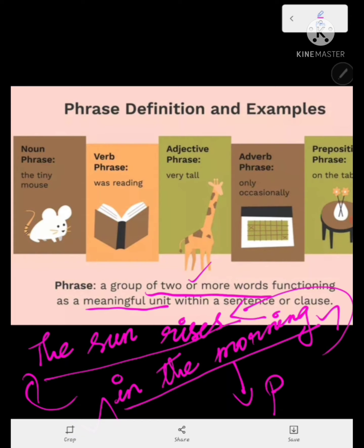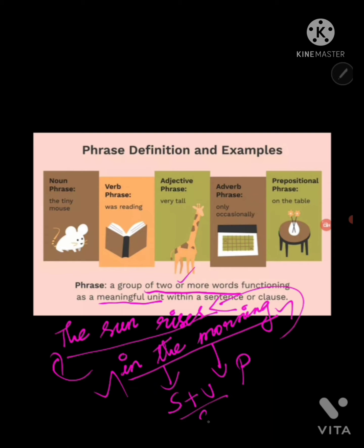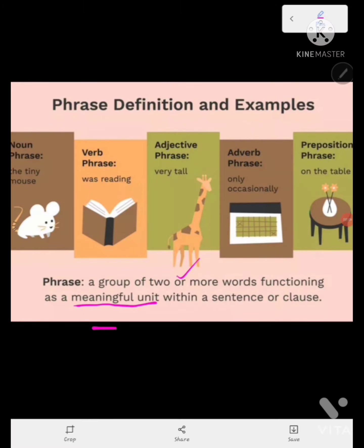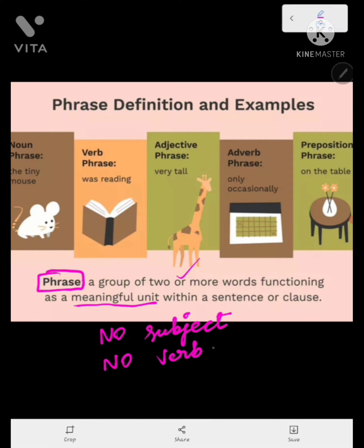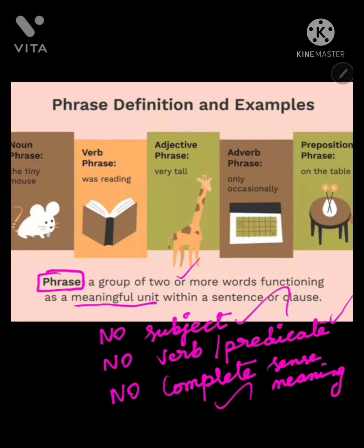A phrase doesn't have a subject plus verb, or subject plus predicate. It has no subject, no verb or predicate, and no complete sense or meaning. I hope you understand this — a phrase doesn't have any subject, any verb or predicate, or any complete sense or meaning.